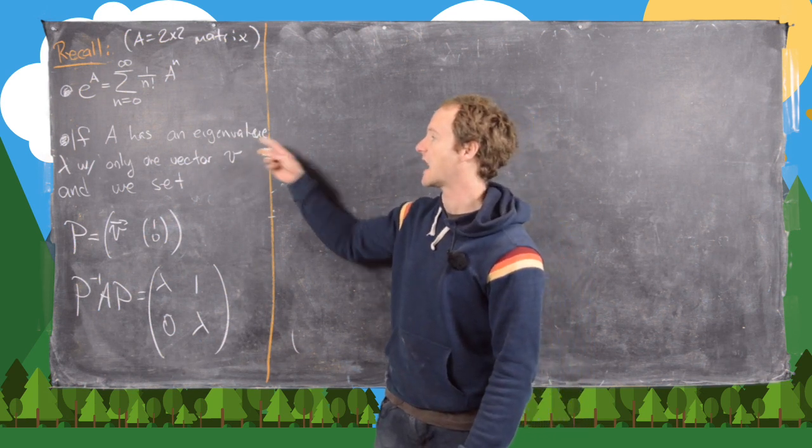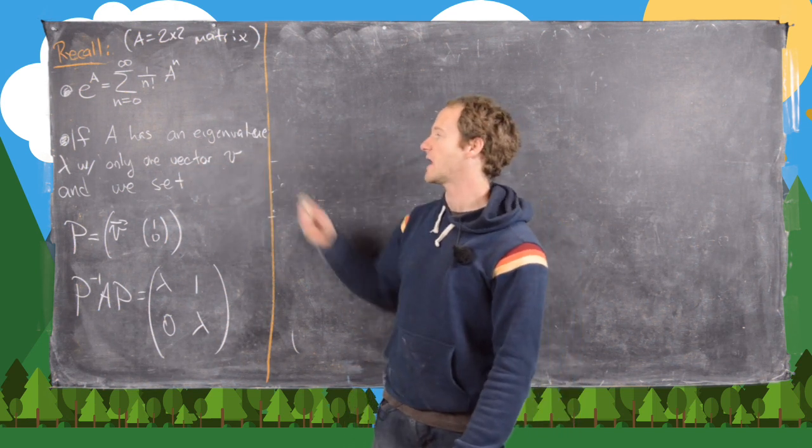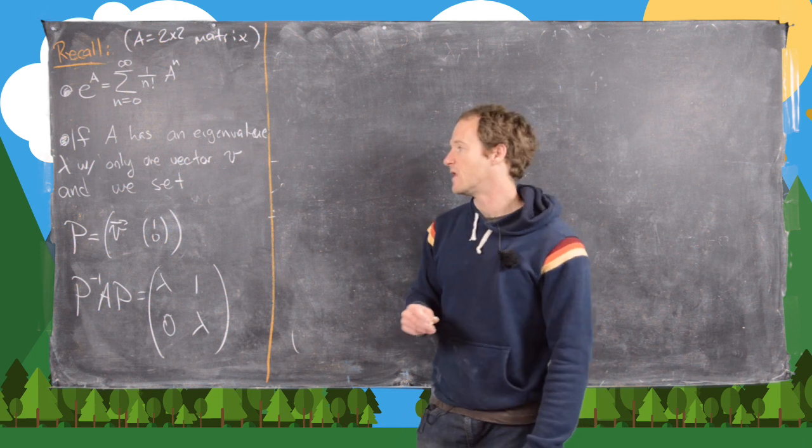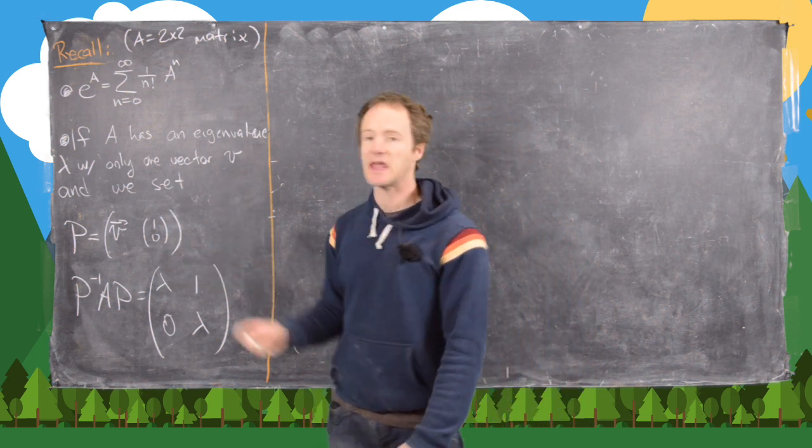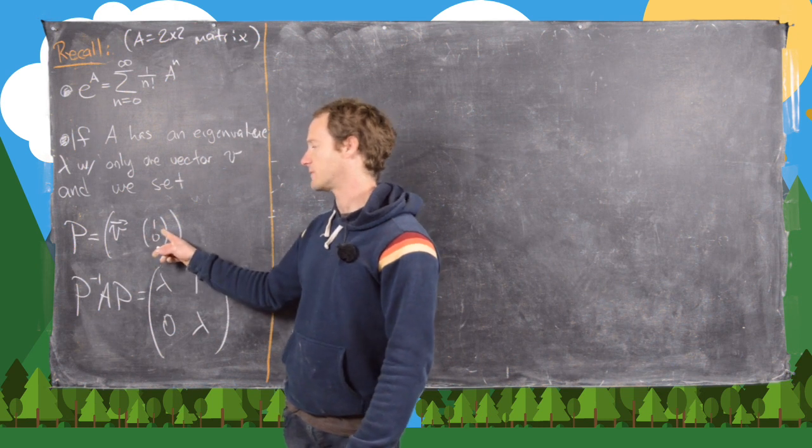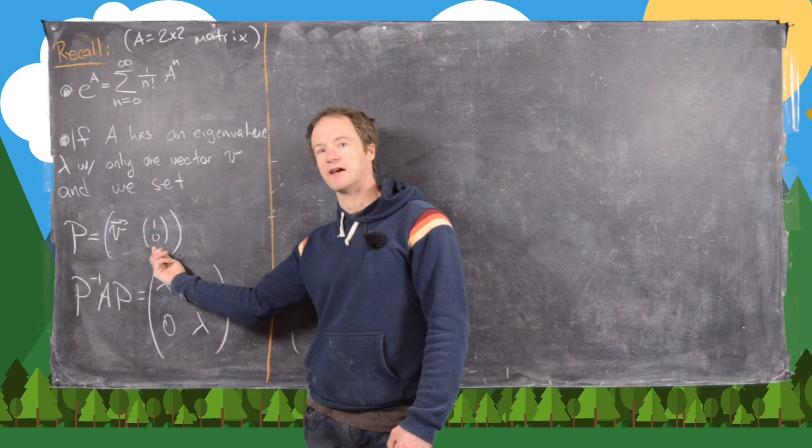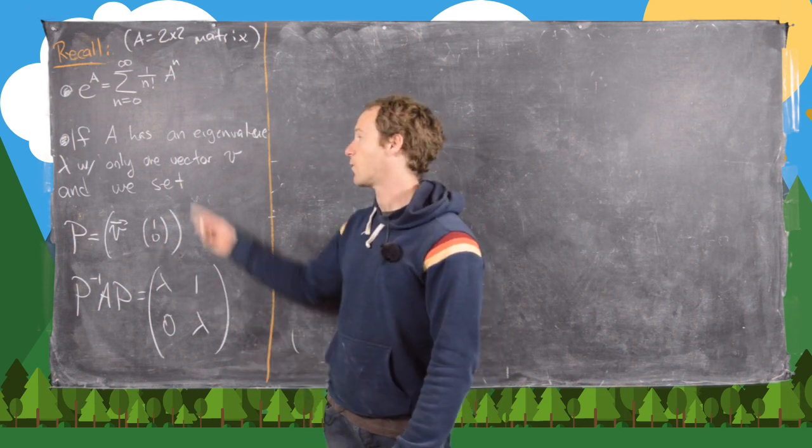Now, if A has an eigenvalue λ, so only one eigenvalue and only one eigenvector v, then if we set P equal to this matrix—so v and then this column is given by just (1, 0)—so this is what we call a generalized eigenvector for this eigenvalue.